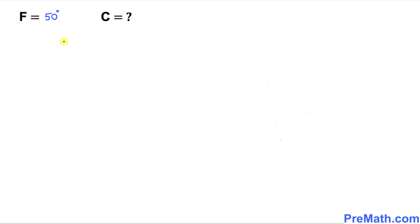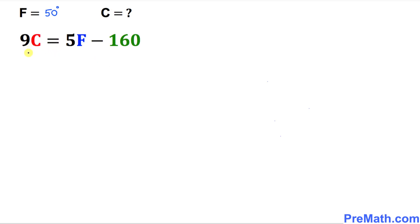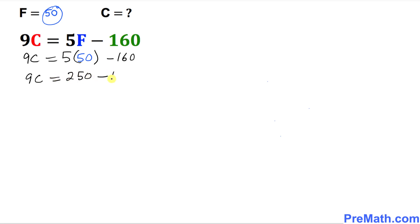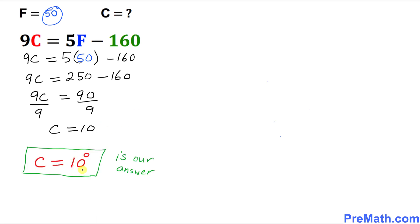Here is our next example. F equals 50 and C is unknown. Using 9C equals 5F minus 160, plugging in: 9C equals 5 times 50 minus 160, which gives 250 minus 160 equals 90. So 9C equals 90. Dividing both sides by 9, C equals 10 degrees — that is our answer.